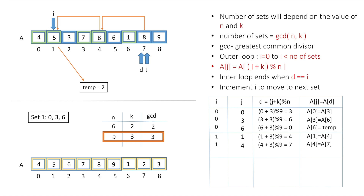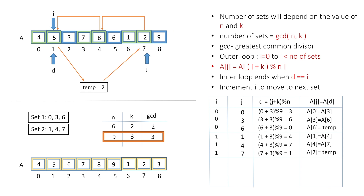With i=1 and j=7, d = (7+3) % 9 = 10 % 9 = 1. Since d equals i, this is the end of the second set. We copy temp to a[j]: a[7] = 2, placing element 2 correctly. The second set consists of indices 1, 4, and 7.